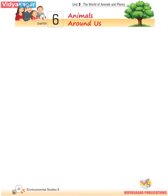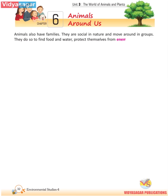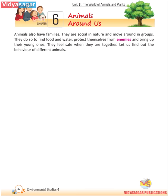Chapter 6: Animals Around Us. Animals also have families. They are social in nature and move around in groups. They do so to find food and water, protect themselves from enemies, and bring up their young ones. They feel safe when they are together. Let us find out the behavior of different animals.